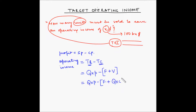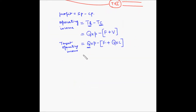The variable cost is the total number of units sold multiplied by the unit variable cost. So now if we have a target operating income that we are targeting, we can use this formula to find out the number of units that need to be sold. Let's use TOI as short form. Target operating income equals Q multiplied by P minus F minus Q multiplied by C.